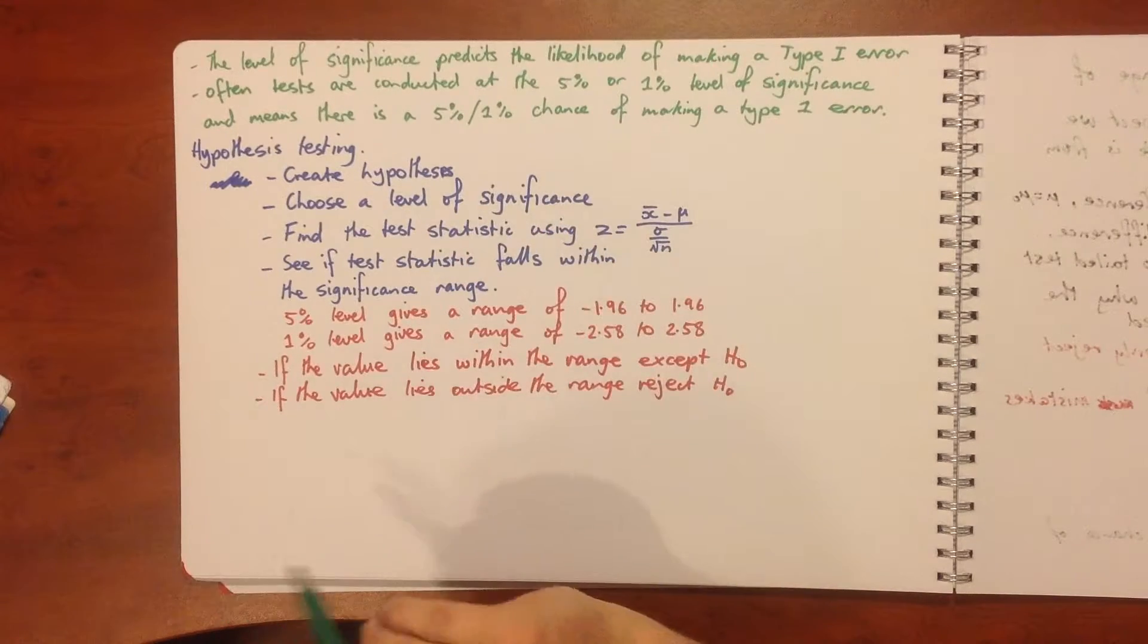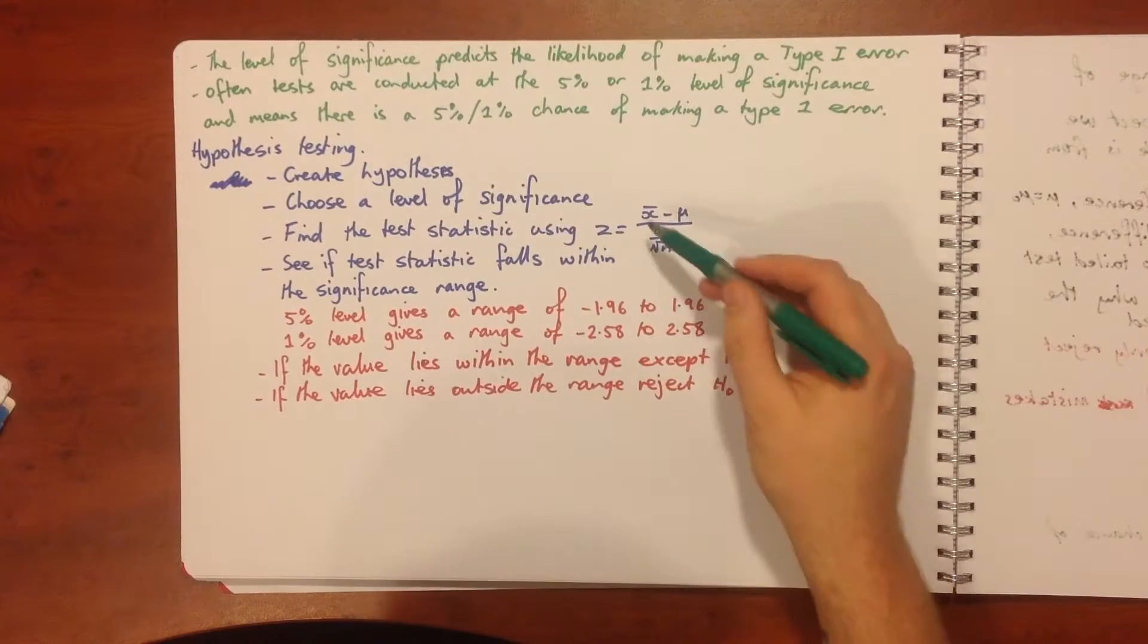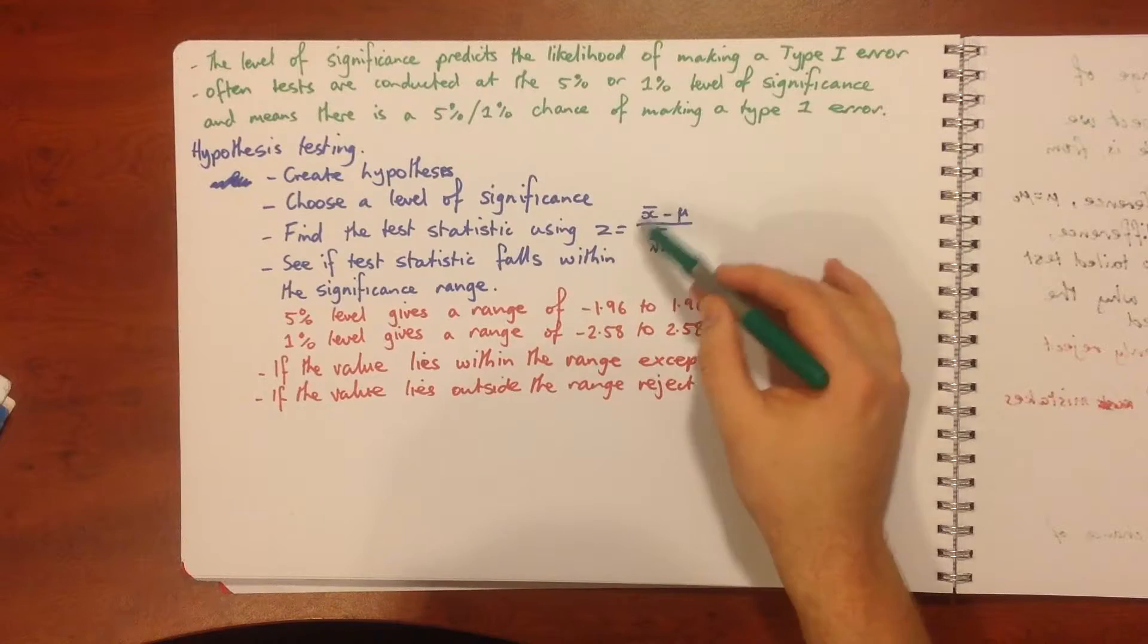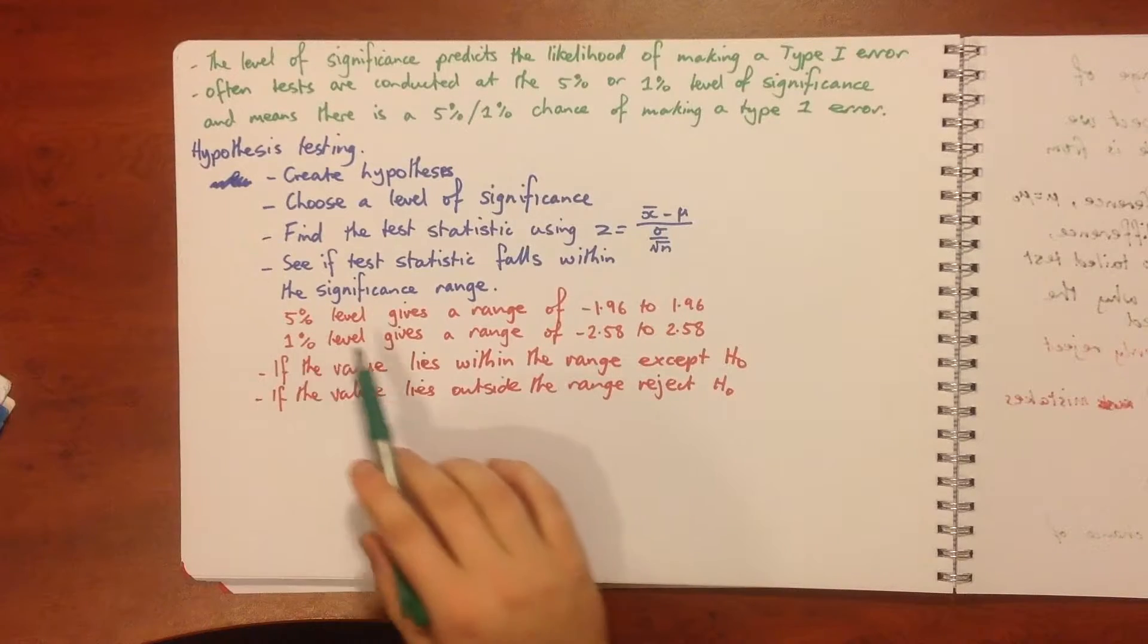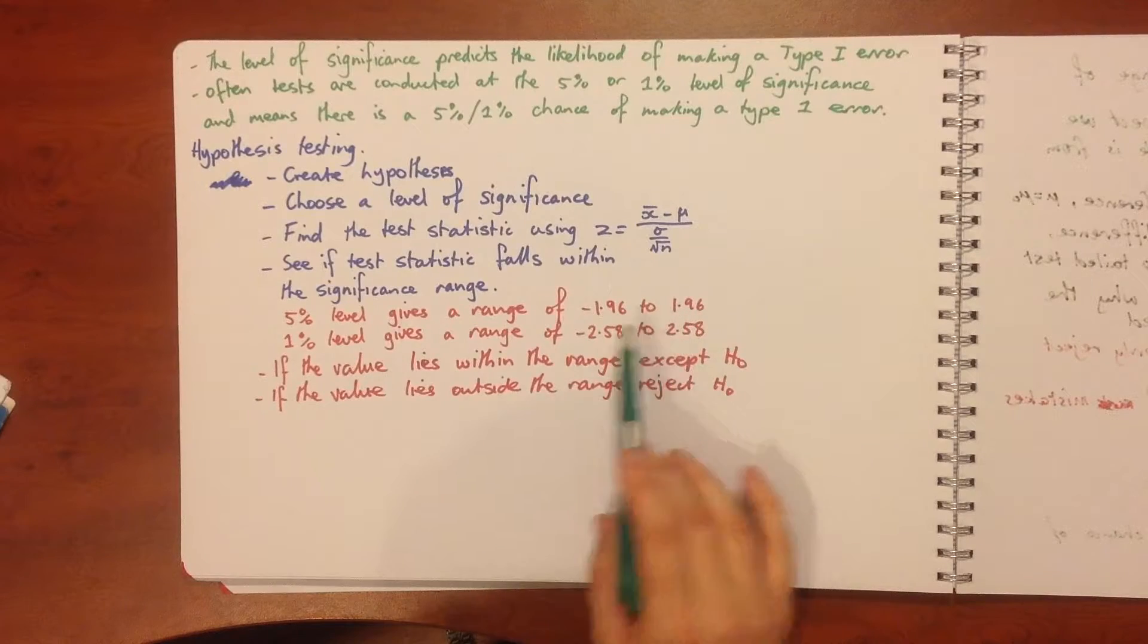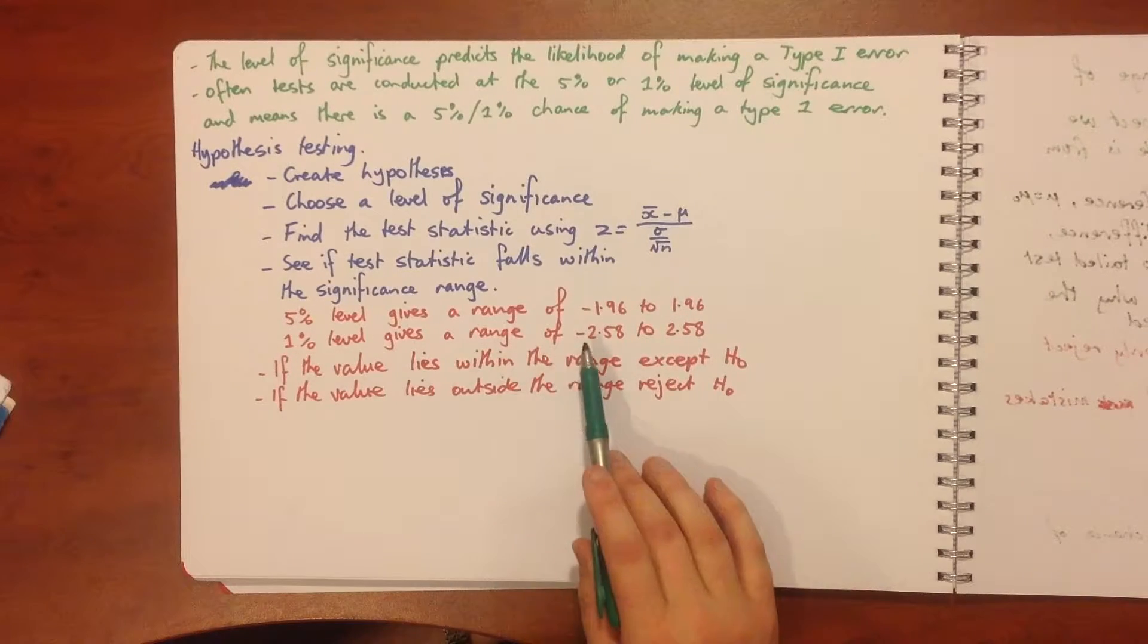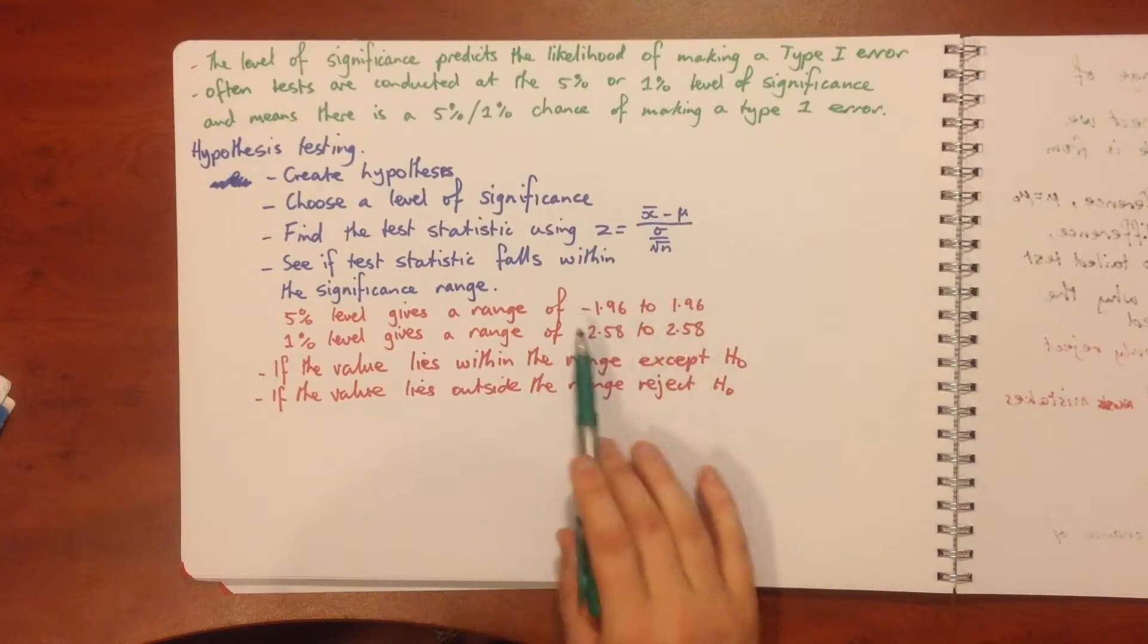When we're doing our hypothesis testing we create our hypothesis, choose a level of significance, find the test statistic using this little formula here and see if the test statistic falls within the significance range. The five percent level gives a range of negative 1.96 to 1.96 and our one percent level gives a range of negative 2.58 to 2.58.